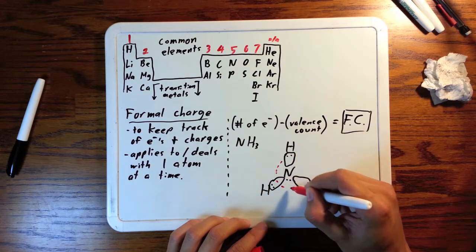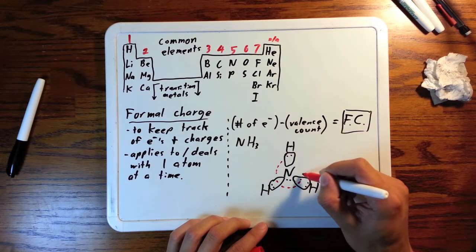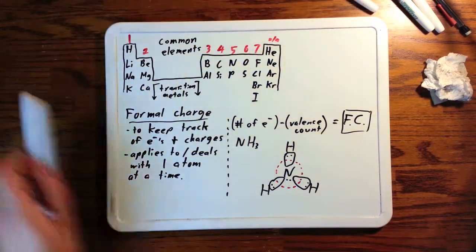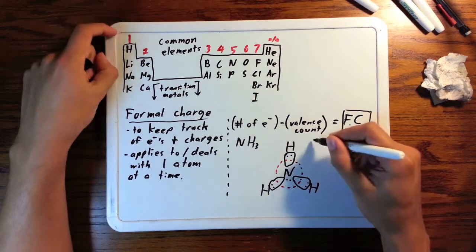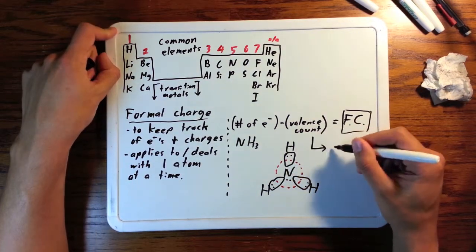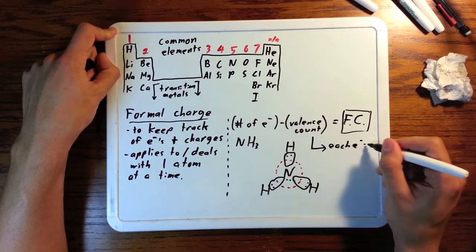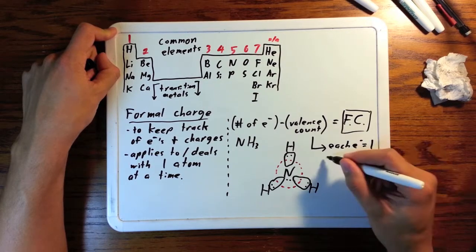Now we only look at the formal charge, as I said, of one atom at a time. Right now we're going to examine nitrogen. We start with the number of electrons it has in its elemental form. That's five. Now as far as valence count, here's how to figure that out.